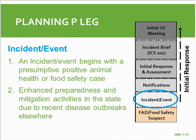Once we get a preliminary positive result from the laboratory, we activate and begin responding immediately. It's much easier to stand down our response if it's a false alarm than to get that ball up and rolling. Some enhanced preparedness mitigation activities that might go on in your state when you don't have a disease detection — like in the case of FMD, some people may be doing surveillance, some may be implementing movement controls — those are the types of activities that we anticipate would require incident management team oversight under definition number two.